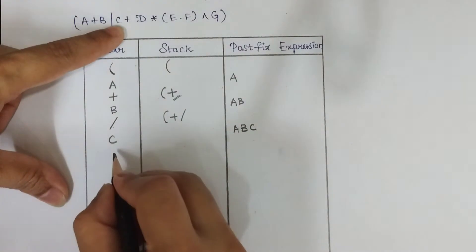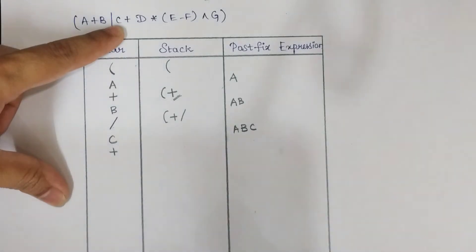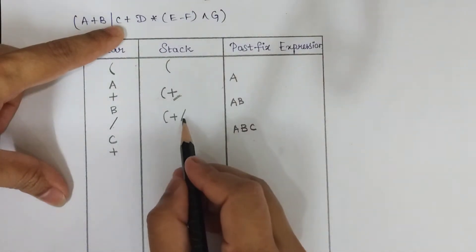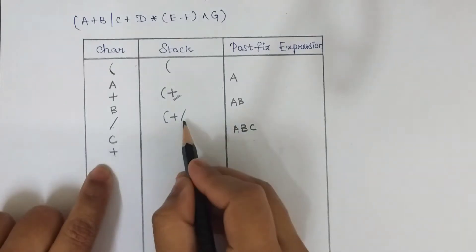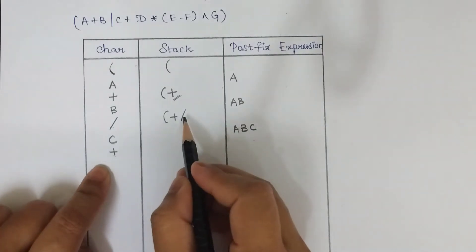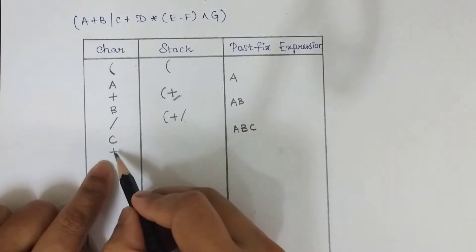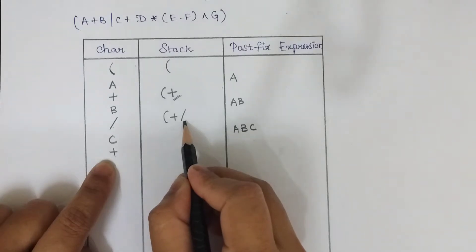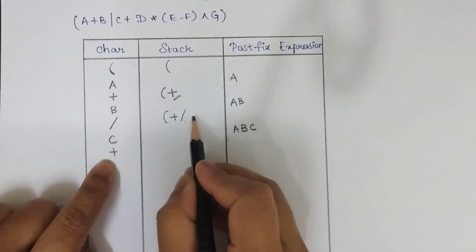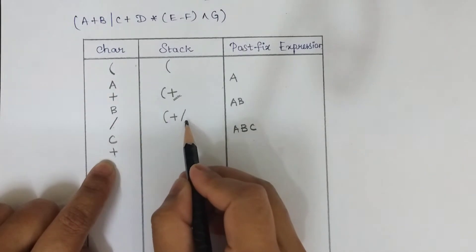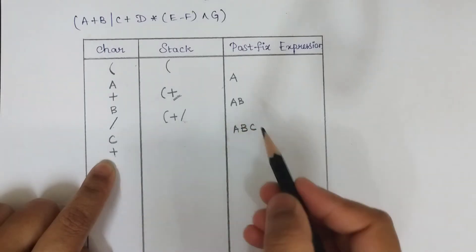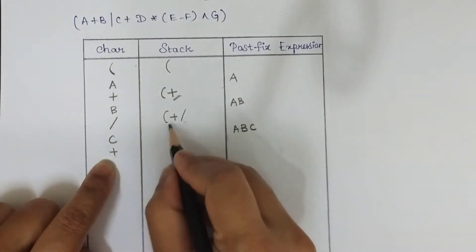The next character is plus again. Before pushing plus into the stack, compare it with the top of the stack. The top of the stack has division. Plus has lesser precedence than division, so the rule is to pop the division operator from the stack and append it to the postfix expression.